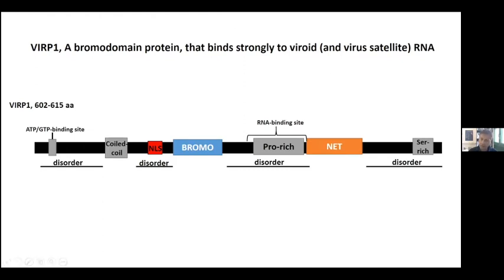In humans, BRD4 is a very famous bromodomain protein. VIRP1 is a BAT protein — bromodomain and NET domain. It also has a nuclear localization signal and intrinsically disordered regions especially at the C-terminus. Prediction software suggests it is likely one of these proteins that undergo phase transitions.